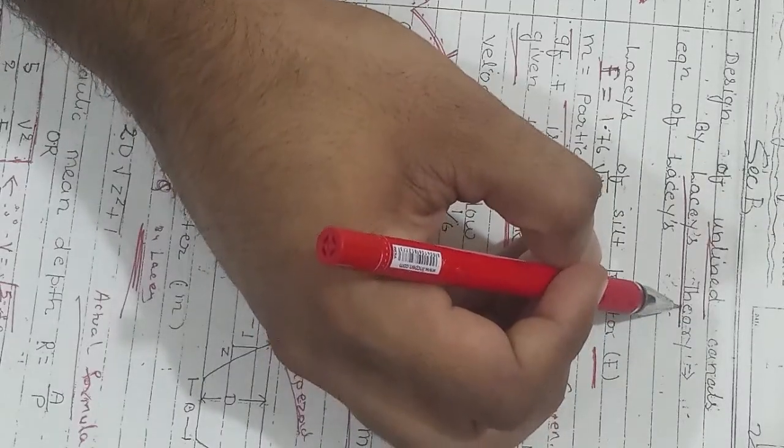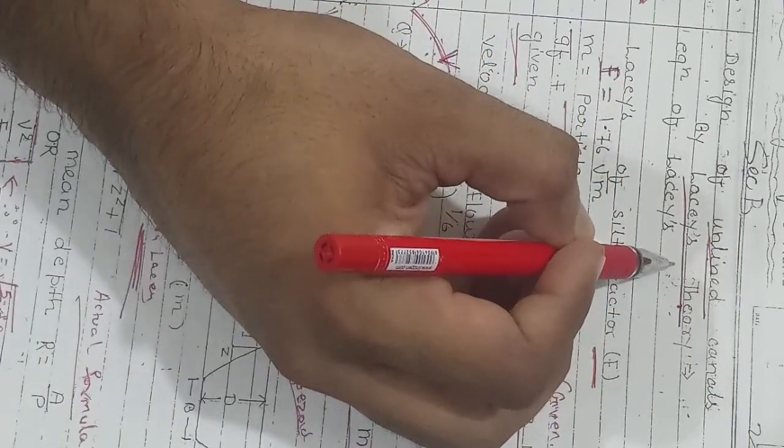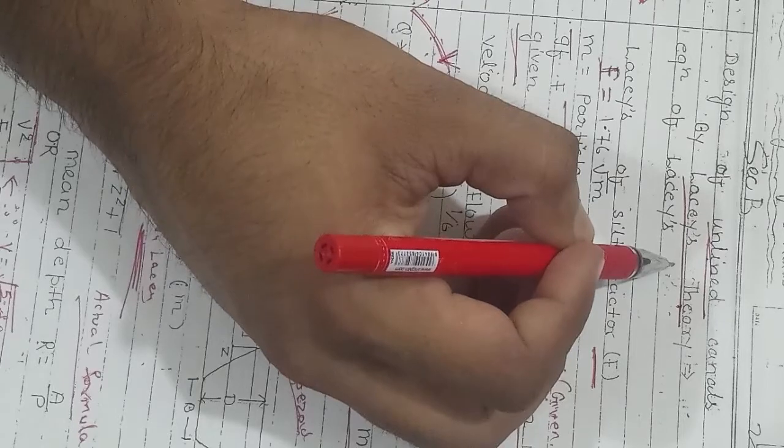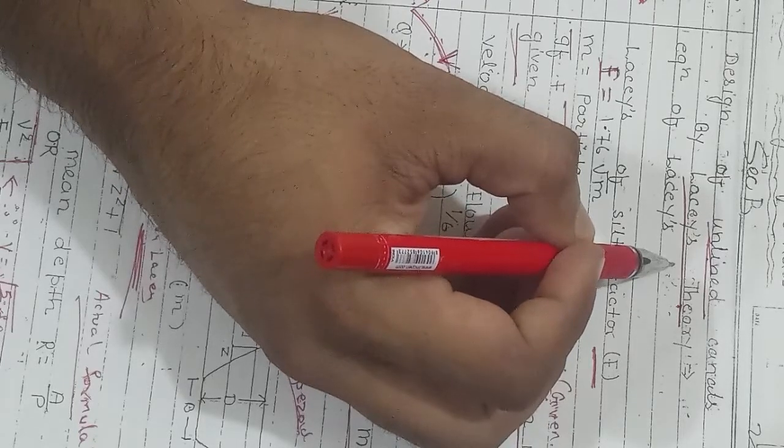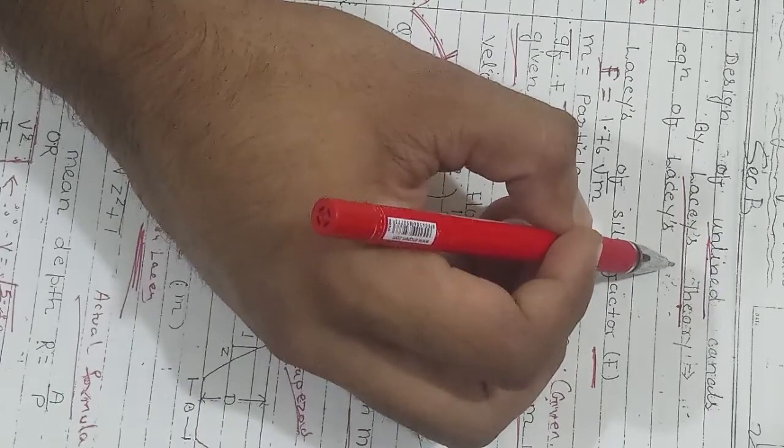Lacey's theory is based on true regime condition, and true regime condition says that the flow is in unlimited alluvial soil. Alluvial soil means earth, which means no protection from concrete—it is an unlined canal.